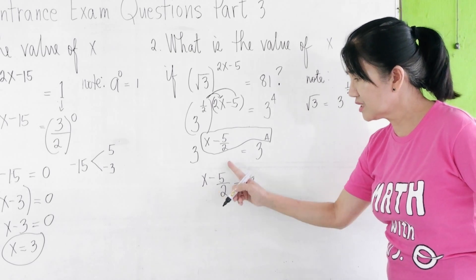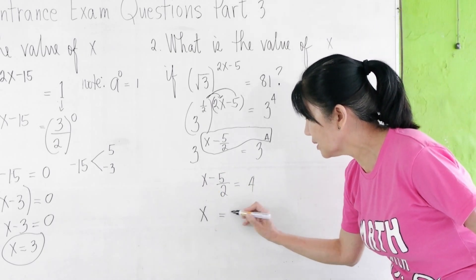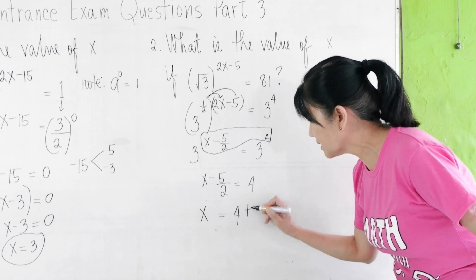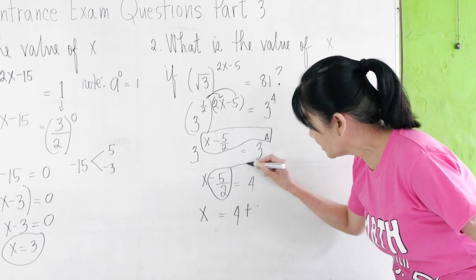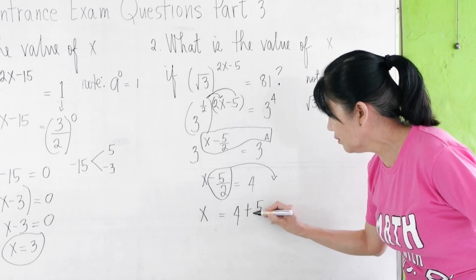To solve for x, transpose this to the other side. So, x = 4 + 5/2.